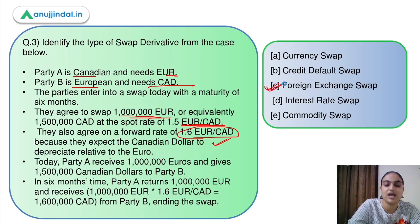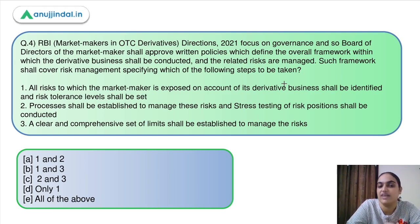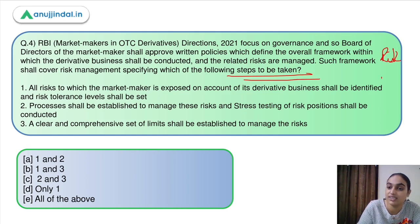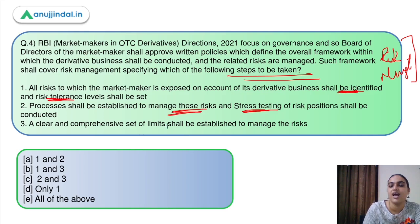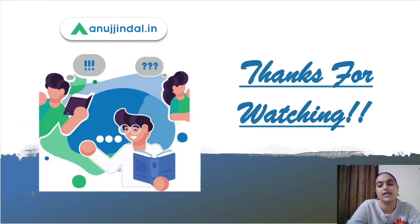Last question: RBI Market Makers in OTC Derivative Directions focus on governance, and the board of directors needs to approve written policies defining the framework within which derivative business will be conducted and risks managed. The framework shall cover risk management specifying: risk identification, setting tolerance levels, stress testing, managing risk, and setting limits. All of these steps were discussed — answer is option E, all of the above. Thank you so much, this concludes today's session.